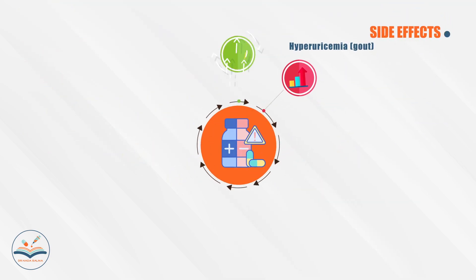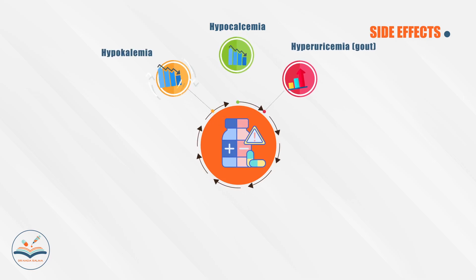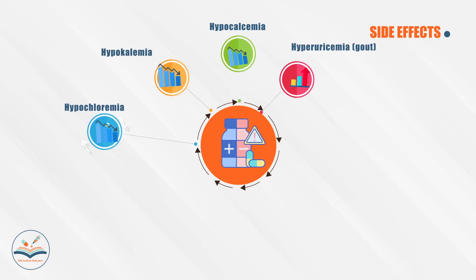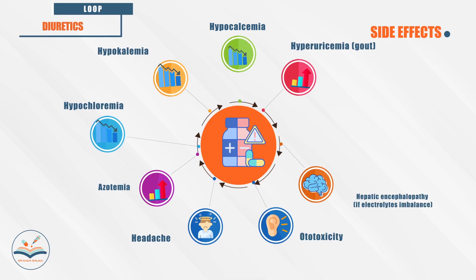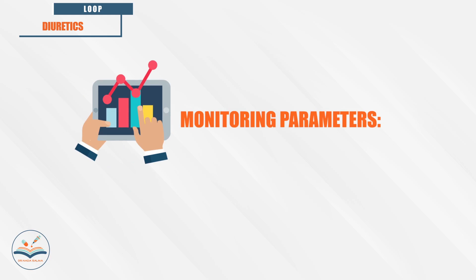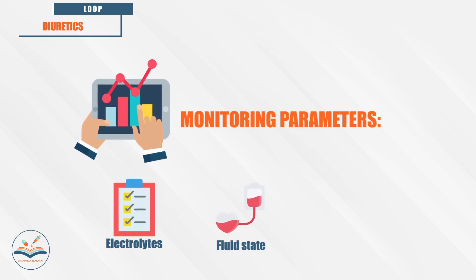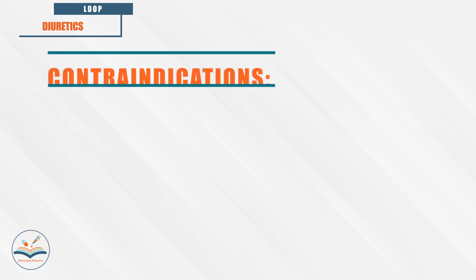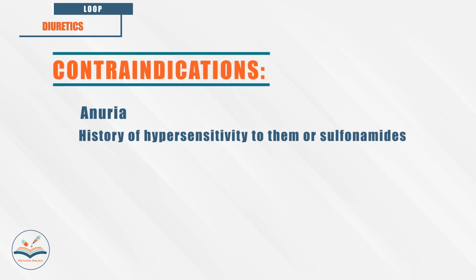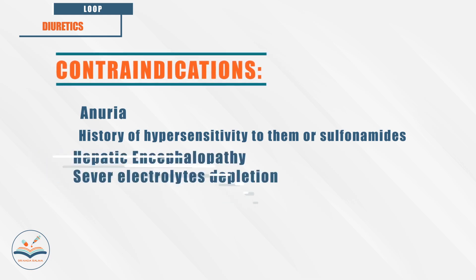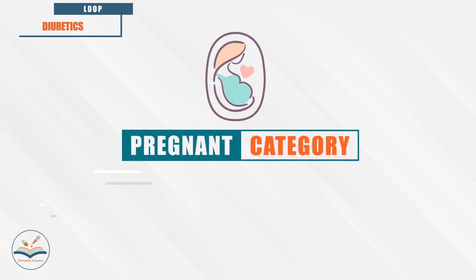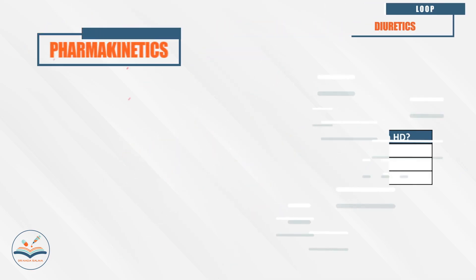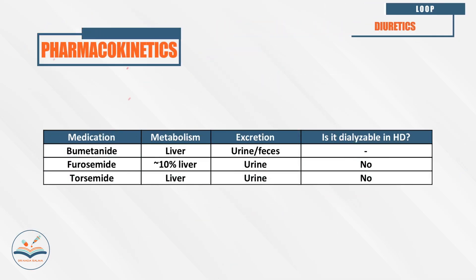Side effects of loop diuretics include hyperuricemia, hypocalcemia, hypokalemia, hypomagnesemia, azotemia, headache, ototoxicity, and hepatic encephalopathy. We have to monitor electrolytes, fluid state, and renal function. They are contraindicated in anuria, history of hypersensitivity to sulfonamides, hepatic encephalopathy, and severe electrolyte depletion. They are category C during pregnancy, metabolized by the liver, excreted by urine, and not dialyzable.